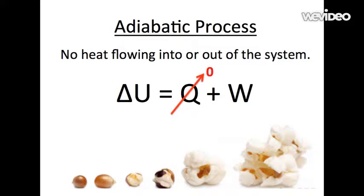When the shell breaks, the rapid expansion of the kernel happens so fast that the system doesn't have time to exchange heat and reach a thermal equilibrium with the surroundings. This is why there is no heat flow. And it is also the reason why popcorn is usually steaming after it pops. The steam inside doesn't have time to equilibrate with the surroundings, so it is simply released.